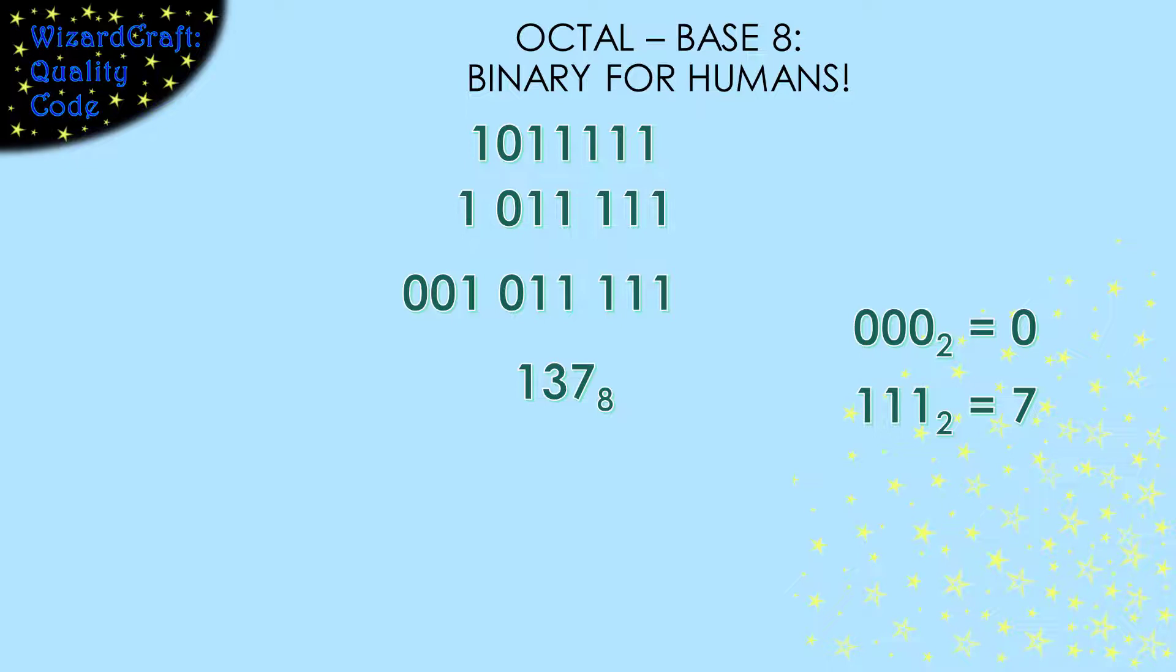So converting from binary to octal only requires grouping by 3s and converting each group. We can convert a number from octal to decimal just by using the definition of base 8, the value in each position multiplied by the appropriate power of 8.